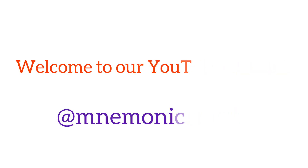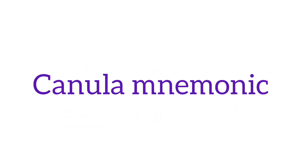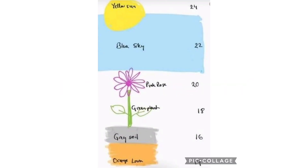Welcome to our YouTube channel Mnemonics Made. Today we will learn about the cannula mnemonic by remembering this story. There is lava — lava is orange color, so remember 14 gauge cannula for orange. It's above there is soil — soil's color is gray, so you can easily remember 16 gauge for the gray color. It's above there are plants — plants are green color, so it is 18 gauge.